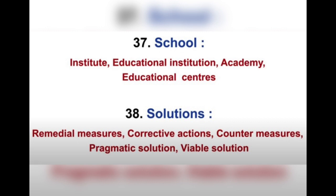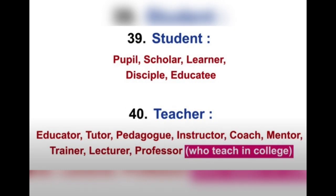For 'reduce' you can use: mitigate, lessen, curtail, alleviate, limit, diminish, lower, and shorten. For 'school' you can use: institute, educational institution, academy, and educational centers. For 'solutions' you can use: remedial measures, corrective actions, counter measures, pragmatic solution, and viable solution. For 'students' you can use: pupils, scholar, learner, and disciple. For 'teacher' you can use: educator, tutor, pedagogue, instructor, coach, mentor, trainer, lecturer, and professor.